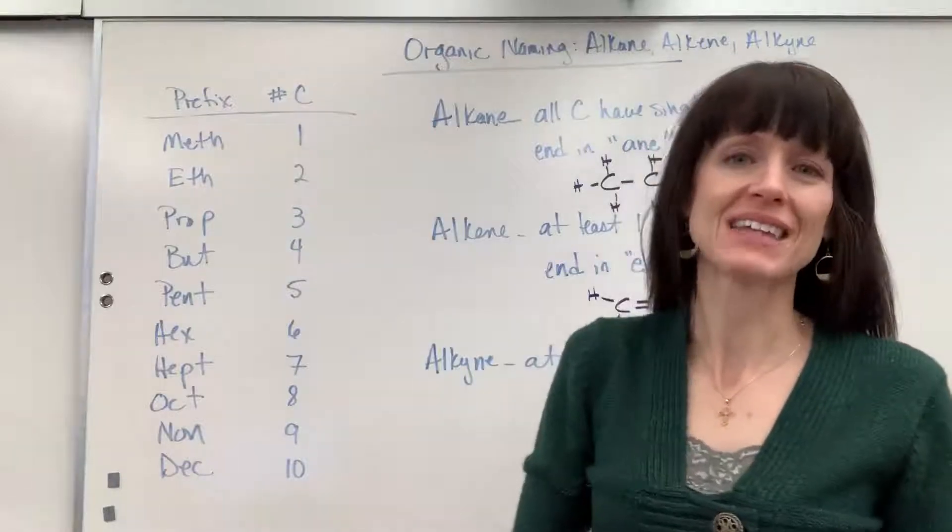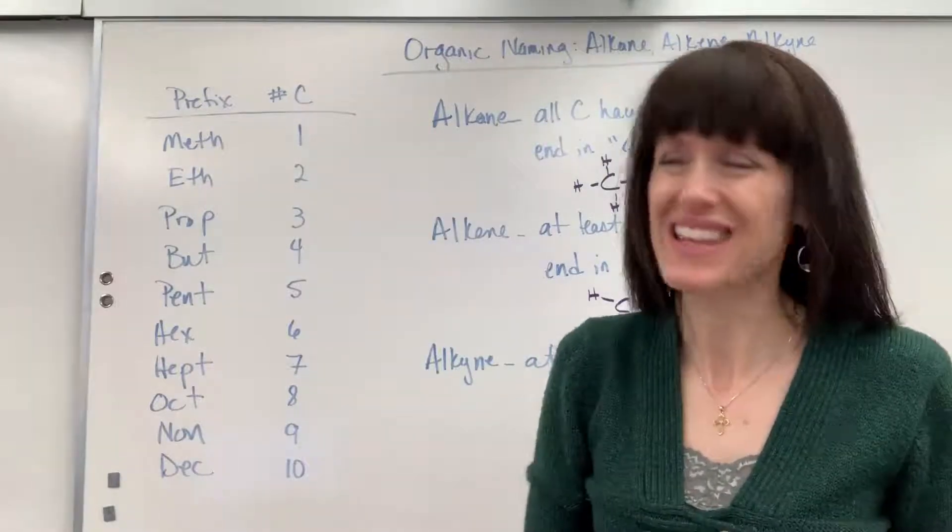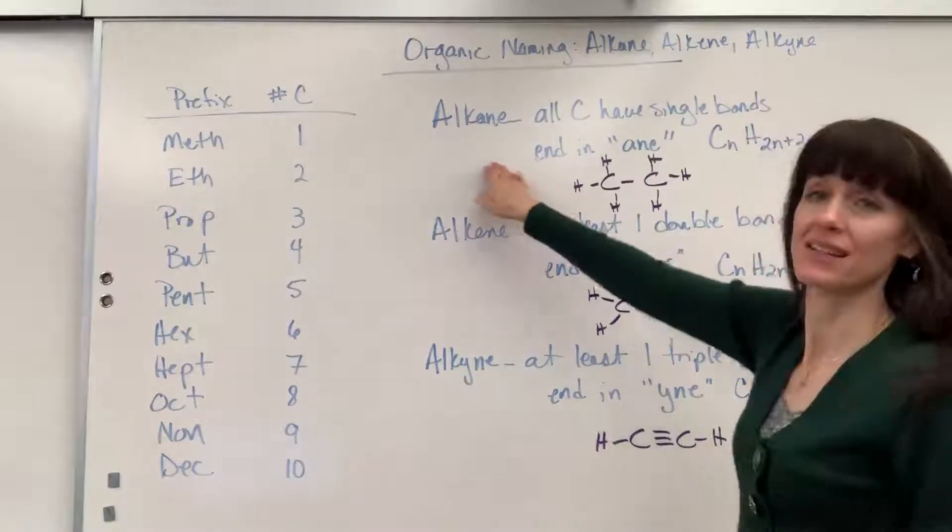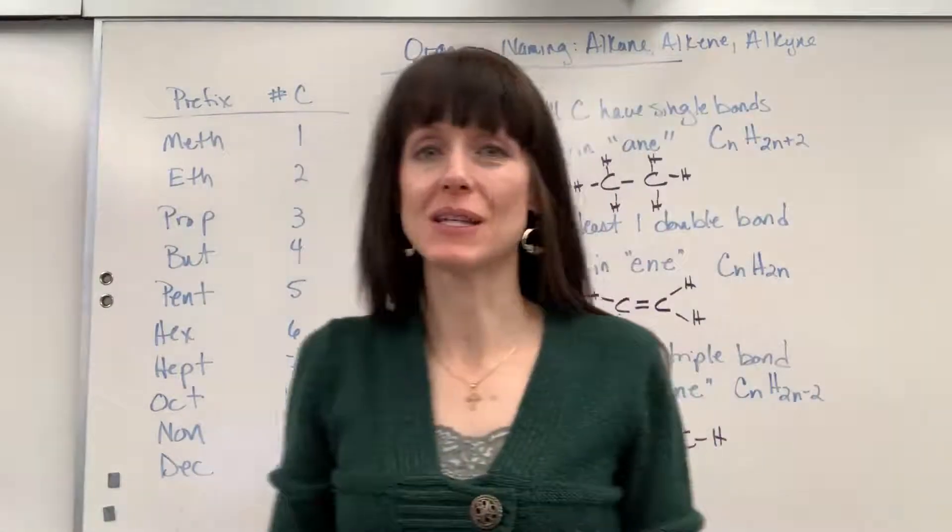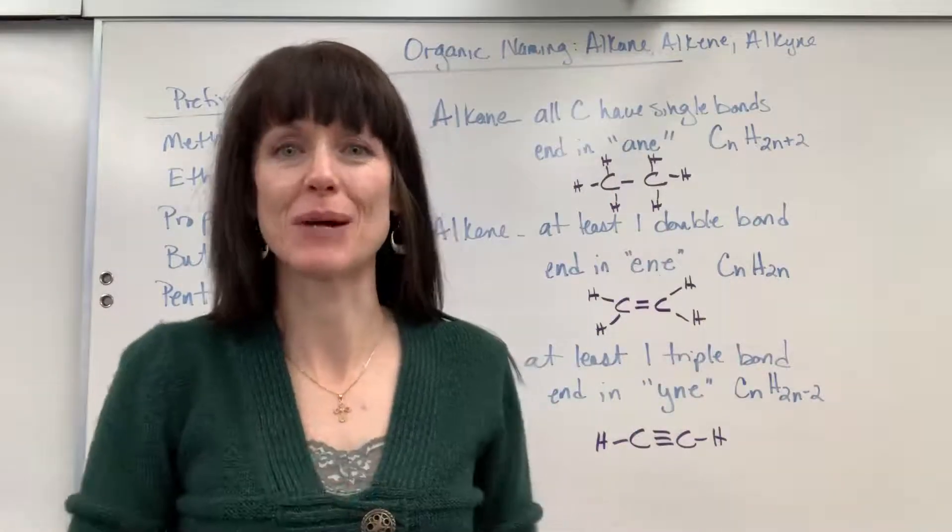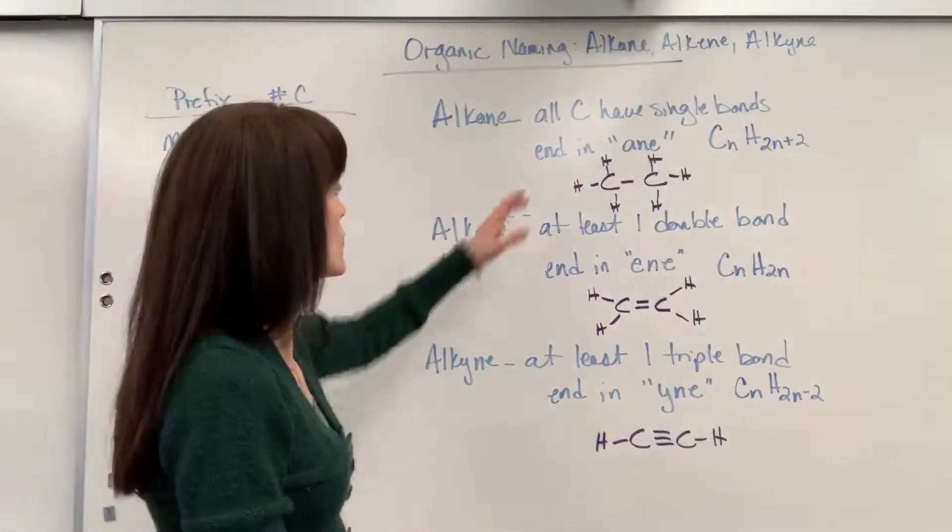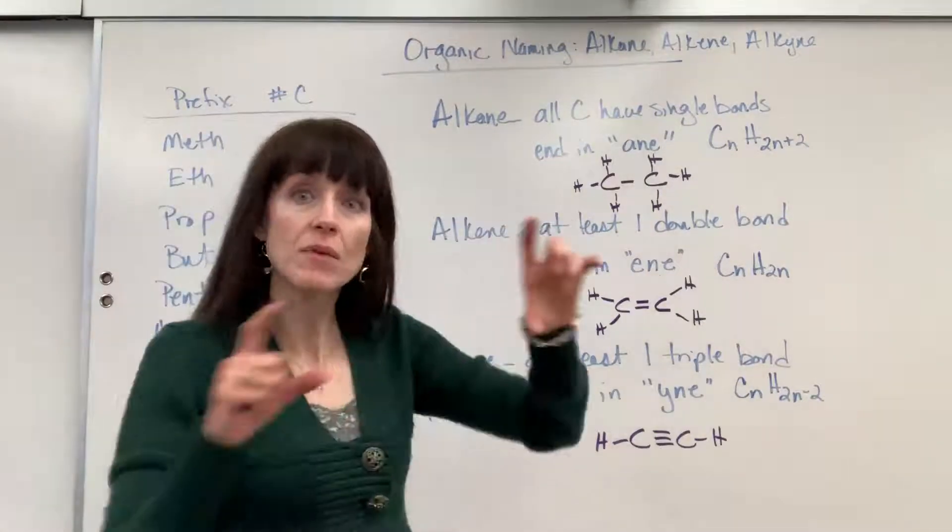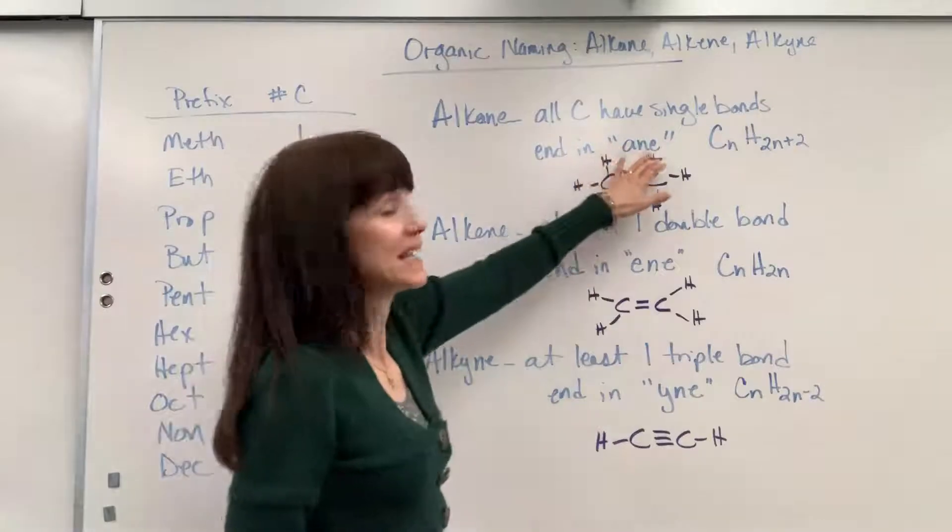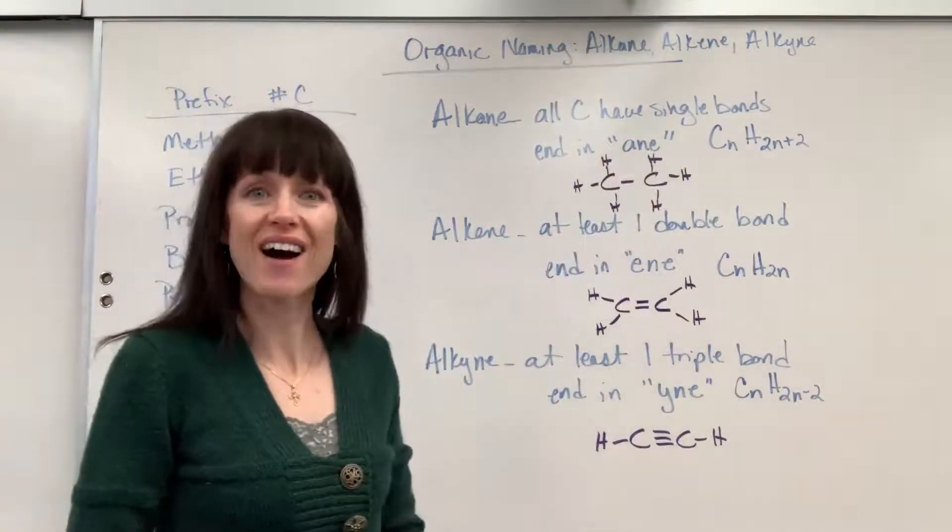We're going to name alkanes, alkenes, and alkynes. An alkane is when you have all single bonds between the carbons in this hydrocarbon, in the carbon chain. We end the name of this carbon chain with A-N-E to indicate that it's an alkane.